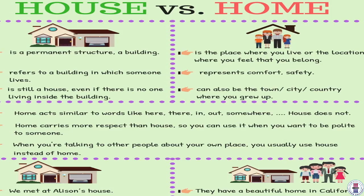Another thing to note is house versus home. If someone asks where you are, you say 'I'm at home' — you don't say 'I'm at house.' You could say 'I'm at my house,' which is fine. The main difference is that house is a specific physical thing you can touch, while home can be a thing or an idea. There are a lot of similarities, so if you want more detail about the difference between house and home, you can read this section.